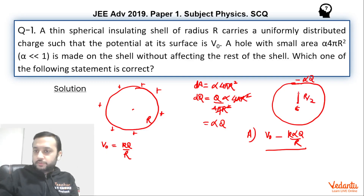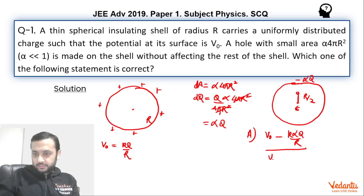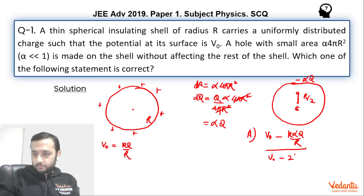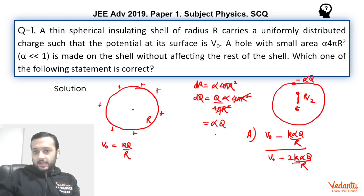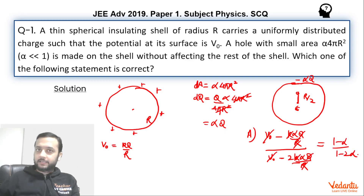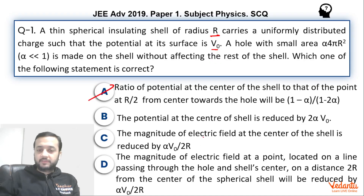Since V₀ = kQ/R, we can substitute and simplify. The potential at the center is V₀(1 − α), and the potential at R/2 is V₀(1 − 2α). So the ratio is (1 − α) / (1 − 2α). Option A is correct, and since this was a single choice correct question, we don't need to check the other options — but we will for learning purposes.